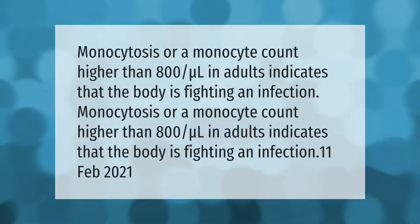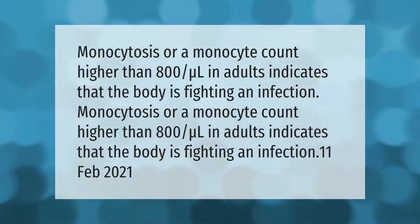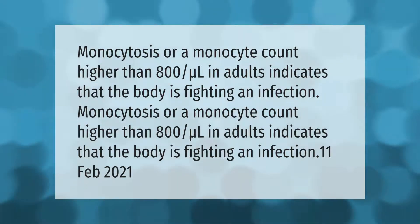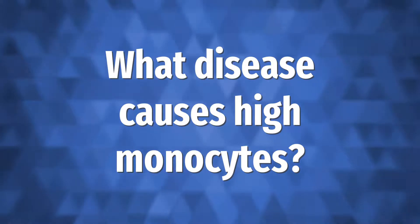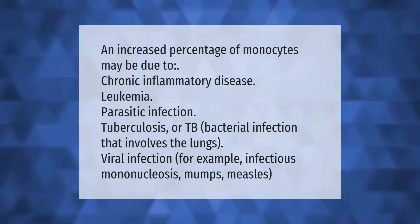Monocytosis, or a monocyte count higher than 800 per microliter in adults, indicates that the body is fighting an infection. An increased percentage of monocytes may also be due to chronic inflammatory disease.